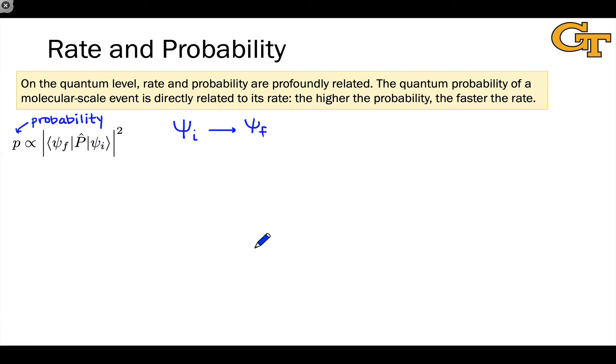Ψ_f is our final wave function. And we're interested in the probability of this event taking place. There's an equation that allows us to calculate this probability if we have knowledge of the nature of the initial quantum state ψ_i and the final quantum state ψ_f, and we have knowledge of the mechanism by which this process takes place. And that's built into this P symbol.